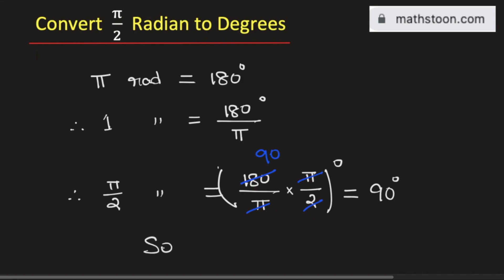So, pi by 2 radian is equal to 90 degree. And this is our final answer. Thank you for watching.